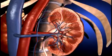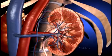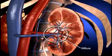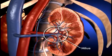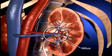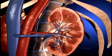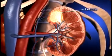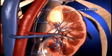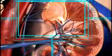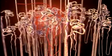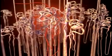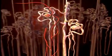The medial border of the kidney is indented by a deep fissure called the hilus, where the blood vessels, nerves, and ureters connect to the kidney. The kidney is composed of up to 18 lobes. Each lobe is composed of nephrons. Nephrons are the functional units of the kidney, and each kidney contains more than one million nephrons.